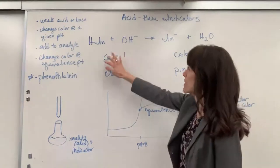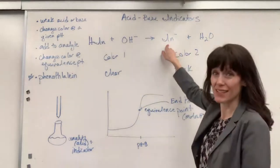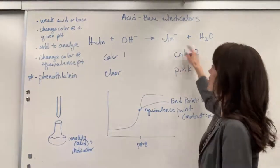So here on the left-hand side, you might have one color. And then over here on the right-hand side, when it's just an indicator ion, you might have a second color.